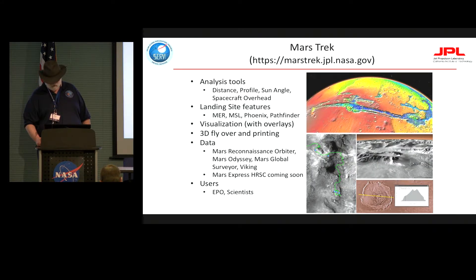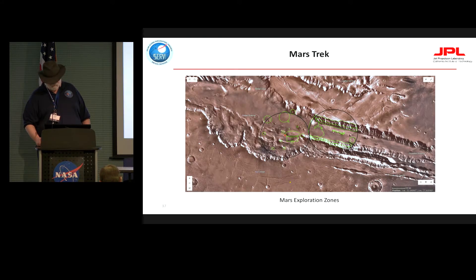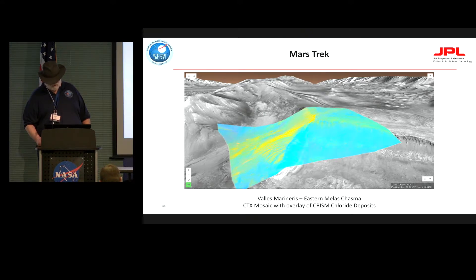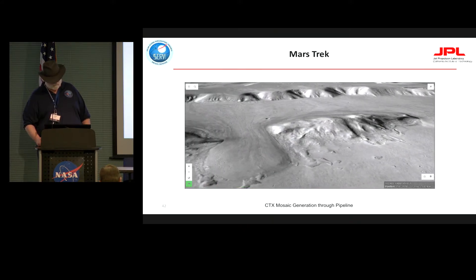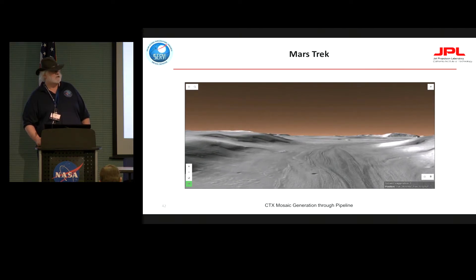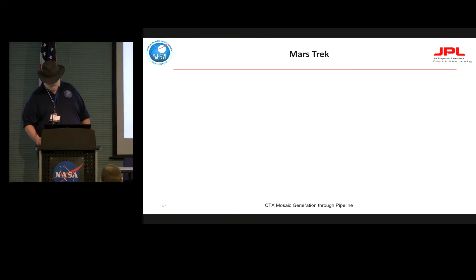Mars Trek is focusing largely on the human exploration zones. There's an upcoming meeting this coming spring to further refine those. With Mars Trek, you're able to zoom in on those, see the 100-kilometer radius exploration zones as well as regions of interest within them, and visualize topography and mineralogy. We're also using the same geospatial pipeline to generate very detailed views of mid-latitude glaciers on Mars, which are considered prime candidates for human exploration zones.